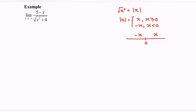Here we have another example: the limit when x approaches positive infinity for the function (5 minus x) over the square root of (x squared plus 4). We already established that square root of x squared equals absolute value of x with the piecewise definition. Substituting the value gives negative infinity for the numerator over positive infinity for the denominator, so we consider this an indeterminate form. The strategy is again dividing numerator and denominator by the highest power of the denominator.